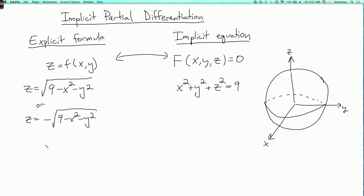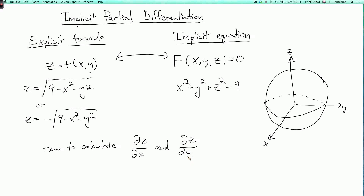So how do we calculate partial z partial x and partial z partial y? We know how to do this when z is given by an explicit formula, so we can differentiate that. In general, however, sometimes you might be given an implicit equation where it's difficult or impossible to solve for z, and in that case there's another method we can use. Let me show you how this works.